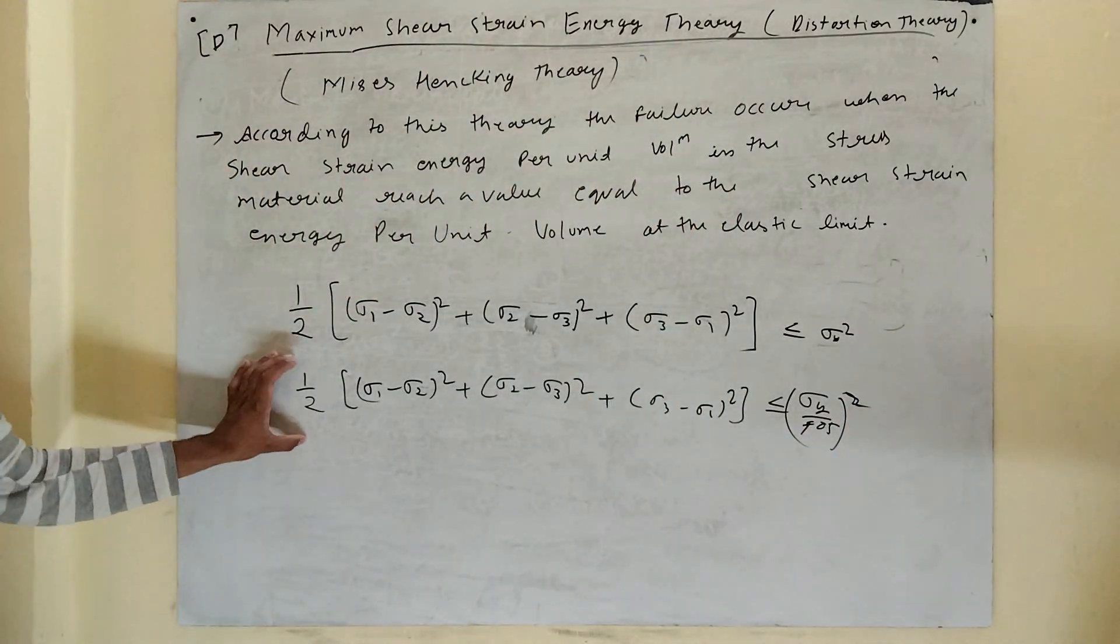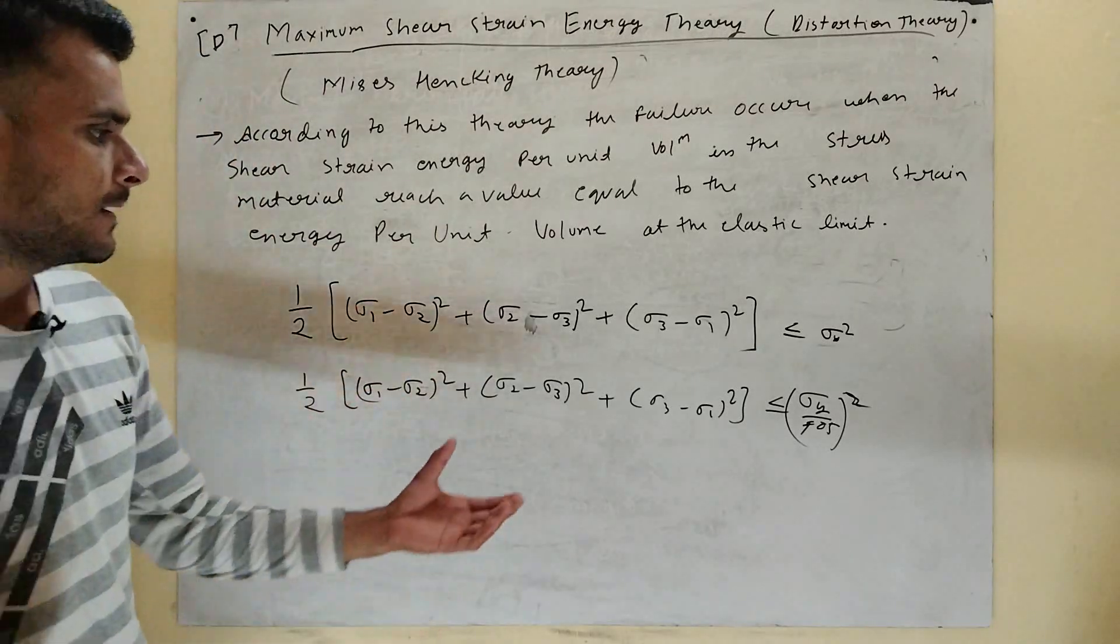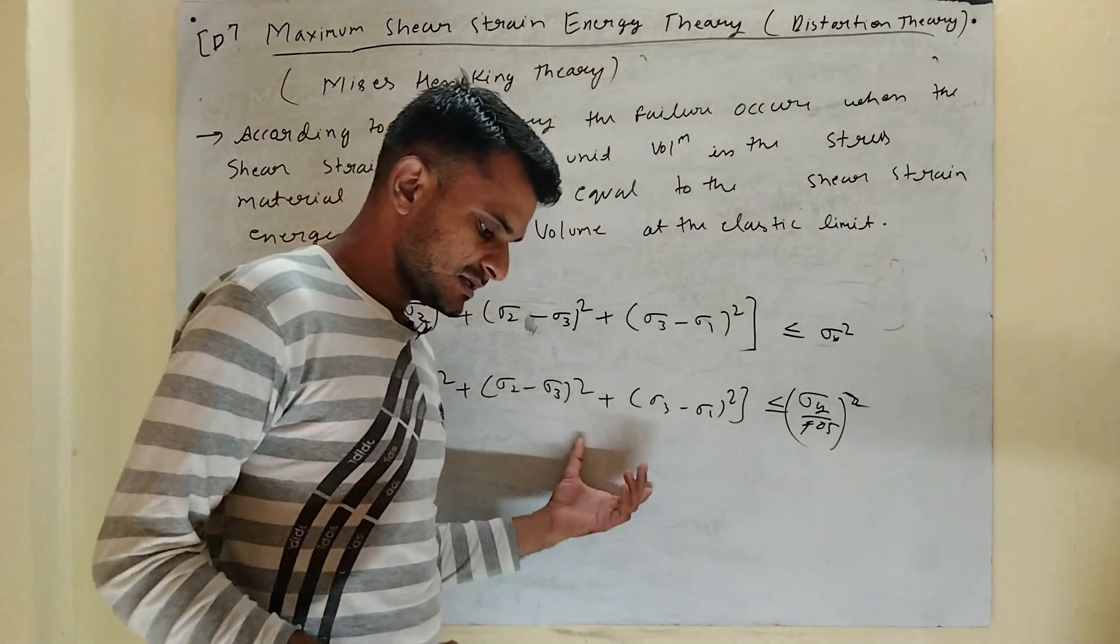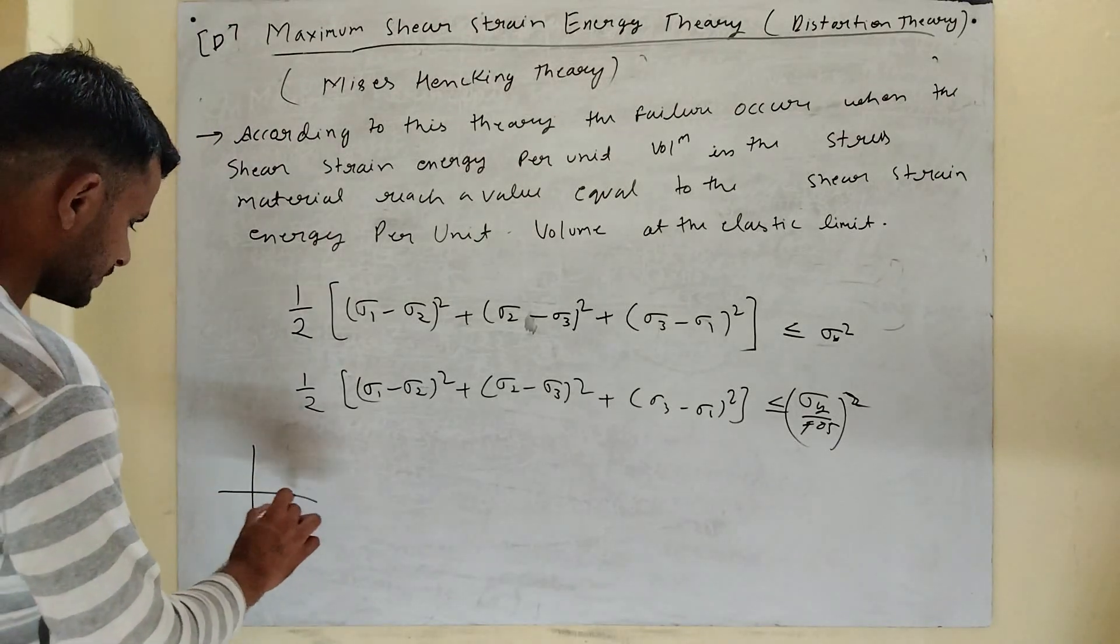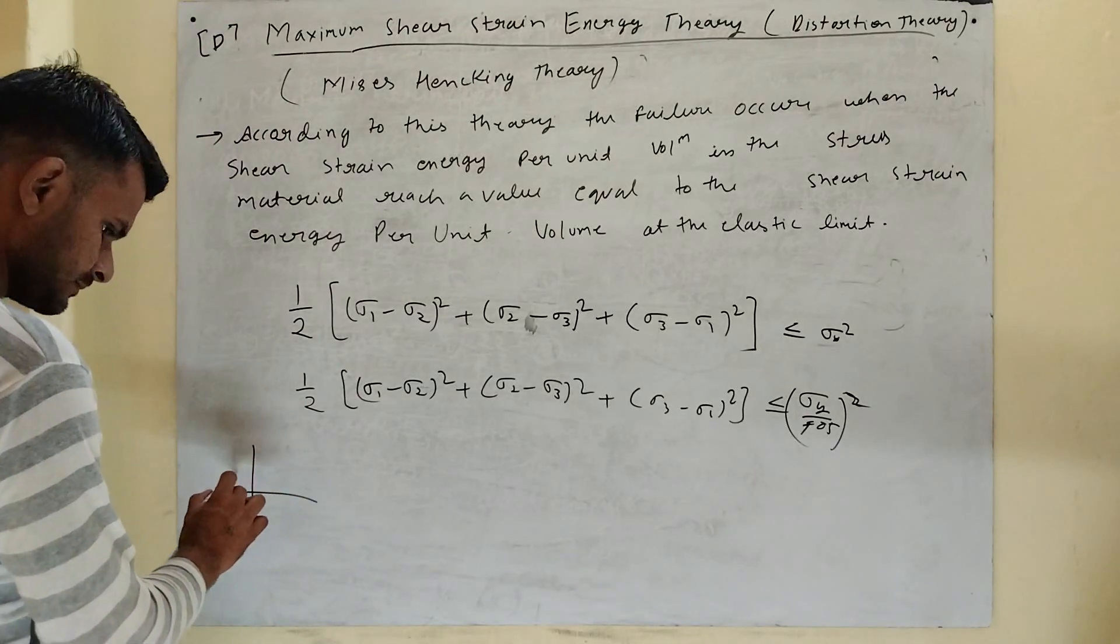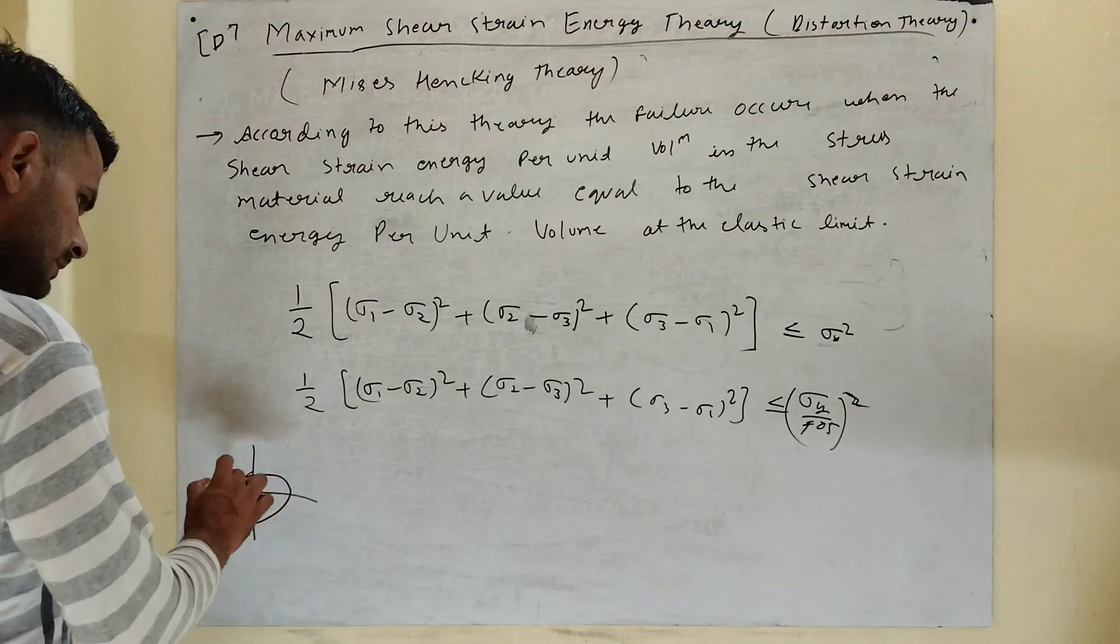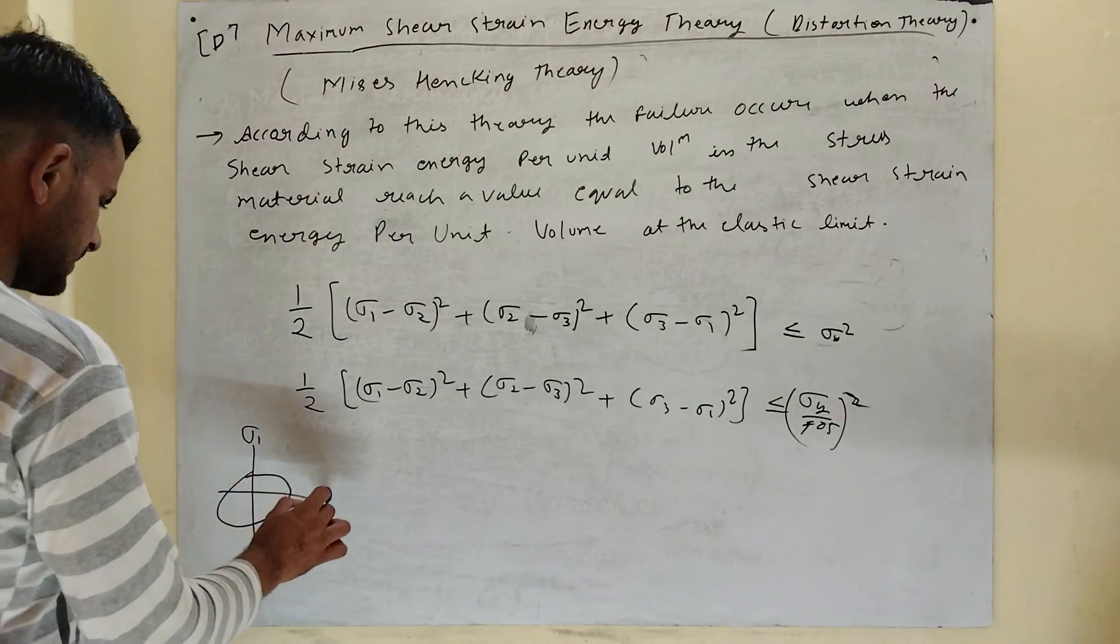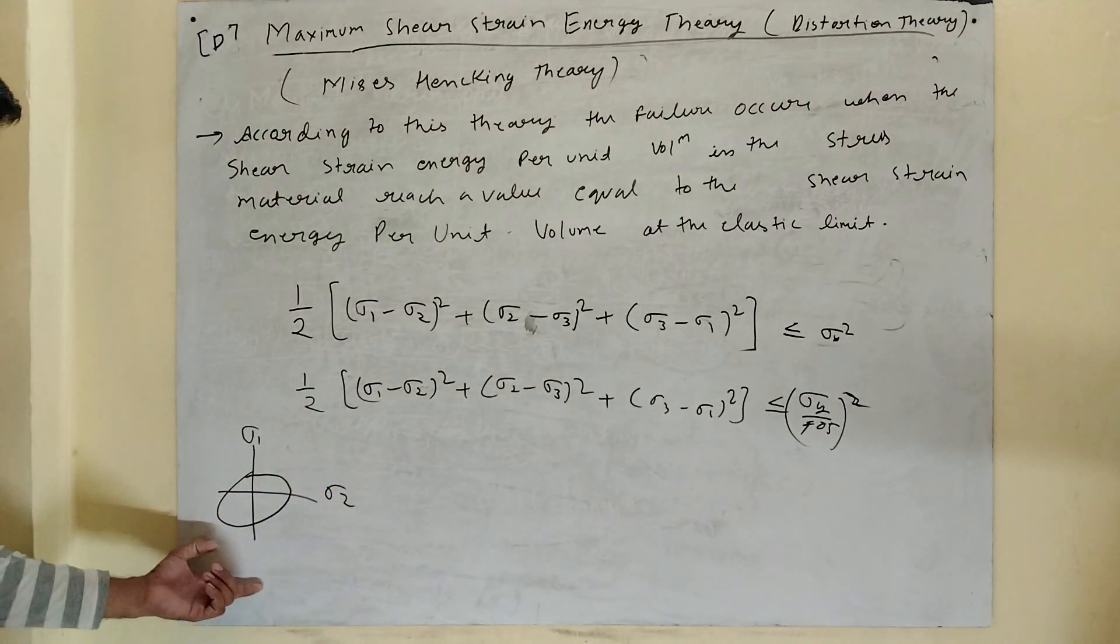This is the no failure condition and the design condition. Now, the graphical representation is an ellipse with sigma 1 and sigma 2. Ellipse is the graphical representation.